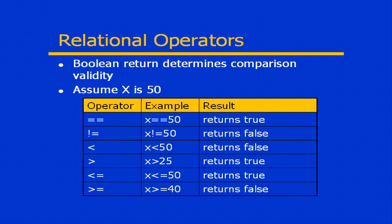The exclamation point is a negation, so the exclamation point followed by an equal sign means not equal to. So x not equal to 50, that would return a false.